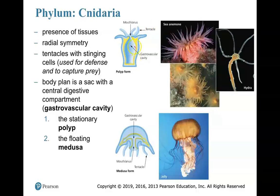Here I'm showing you an anemone in polyp form. This is the stationary form. There are two different forms: a stationary polyp form or a floating medusa form. In the polyp form, there's that central gastrovascular cavity, and you can see those tentacles coming outwards. These tentacles look like cilia but are much larger — not microscopic, you can actually visibly see these extensions. This is a eukaryotic multicellular creature, so these tentacles are part of the body, not just part of a cell. There's a small opening that serves as both mouth and anus.